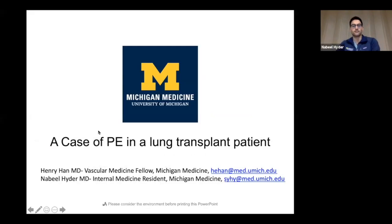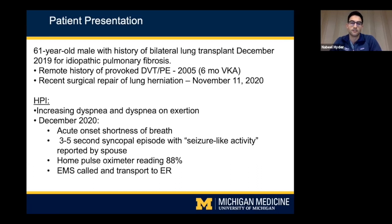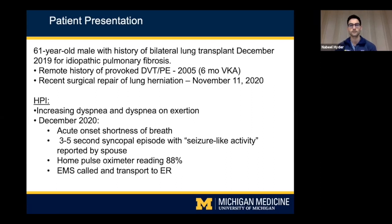Thanks again to CVI for having us here to share this case — a case of PE in a lung transplant patient. Our patient is a 61-year-old male with a history of bilateral lung transplantation in December 2019 for a diagnosis of IPF. He also has a notable history of prior provoked DVT and PE in 2005, managed with six months of warfarin. Our case takes place in December 2020; in the month prior, he had a lung herniation repair in early November.